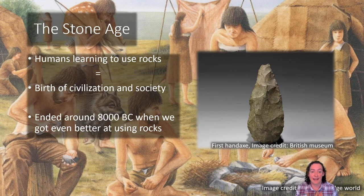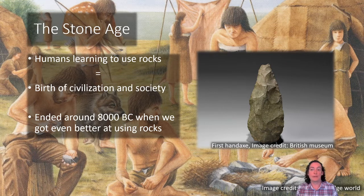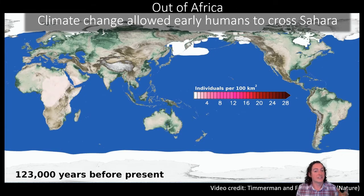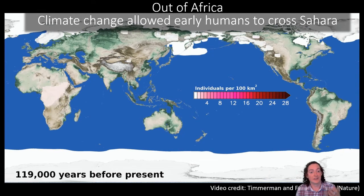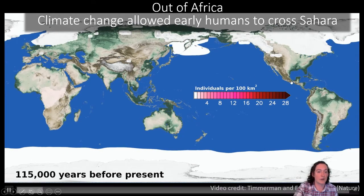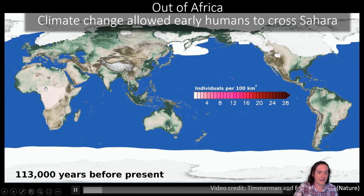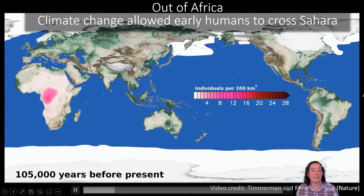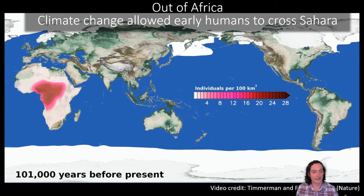This period ended around 800 BC when we got even better at using rocks. But it's not just our ability to use rocks that shaped this time period — it was also the climate and how it changed. Here is a graphic about the distribution of early humans. At the beginning, we're all stuck in Africa and can't get out because the Sahara Desert provides an impenetrable blockade.